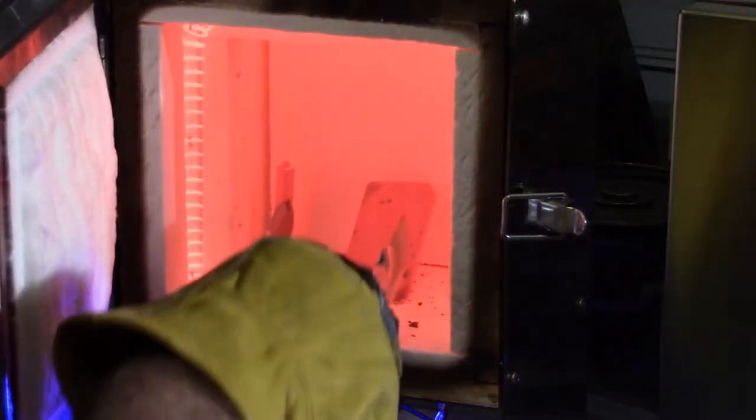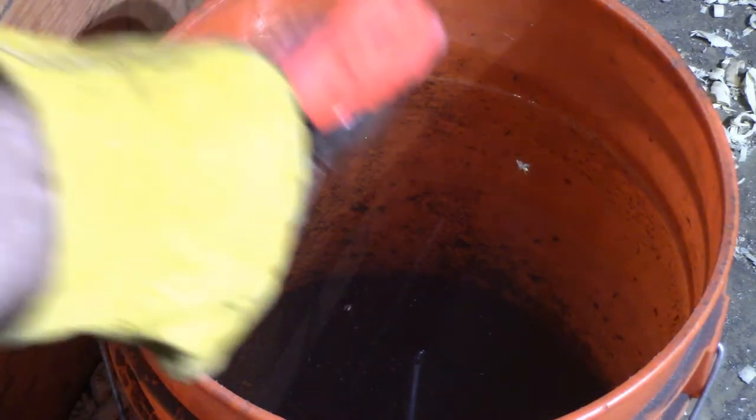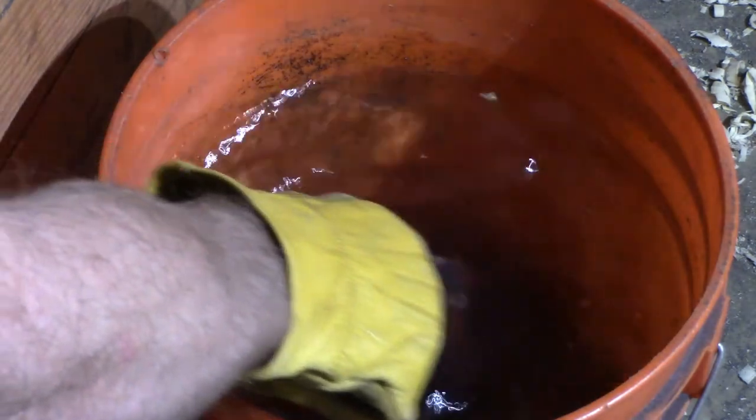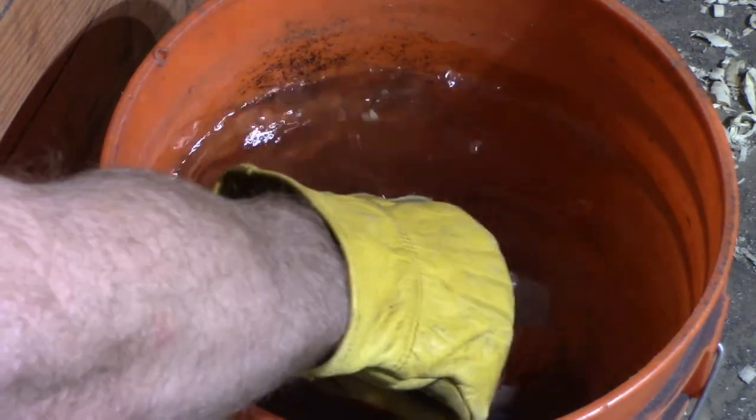After 30 minutes, I quench the iron in room temperature water. I keep it moving to prevent formation of a vapor cloud and make it cool as quickly as possible. Unlike when quenching a sword, I want this plane iron as hard as I can get it, and I'm not really worried about it cracking during the quench.